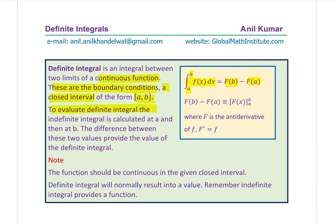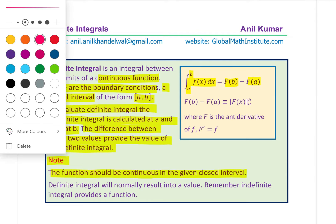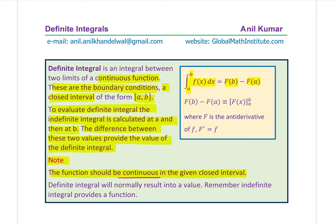To evaluate a definite integral, the indefinite integral is calculated at a and at b. The difference between these two values provides the value of the definite integral — that means it is a number. The function should be continuous in the given closed interval. The two important things are that it is continuous and it is within a closed interval. The definite integral will normally result in a value.